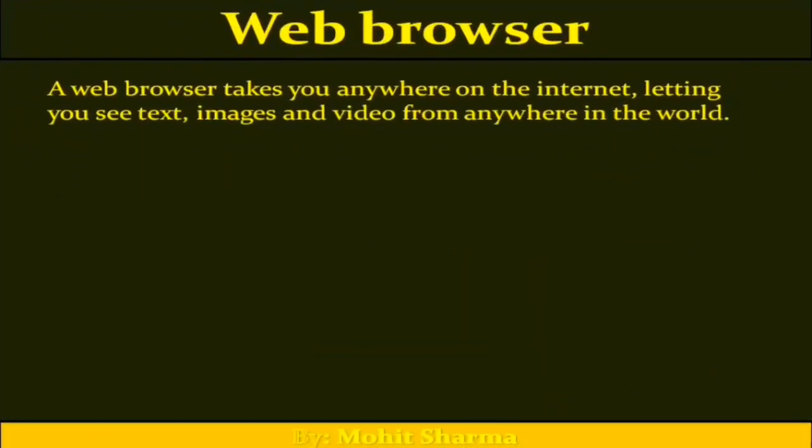First, web browser. A web browser takes you anywhere on the internet, letting you see text, images, and videos from anywhere in the world. This is the working of the web browser. With the web browser we can see the contents of a website or a web page — we need a web browser for that purpose. A website can have text, images, videos and many other files, so to see what is there or to communicate with others we need a web browser.